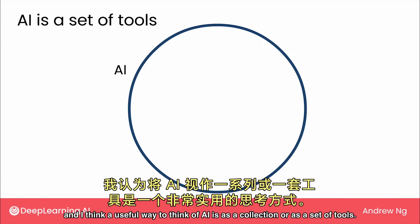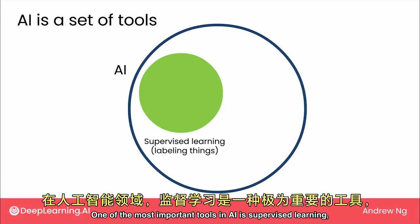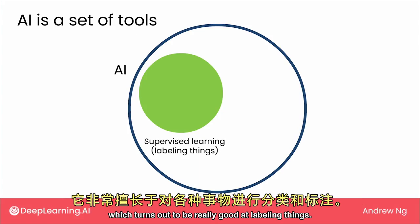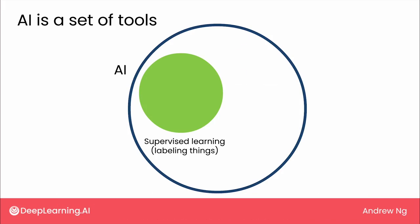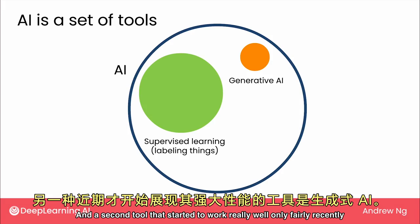I think a useful way to think of AI is as a collection or as a set of tools. One of the most important tools in AI is supervised learning, which turns out to be really good at labeling things. Don't worry if you don't know what this means — we'll talk more about it on the next slide. And a second tool that started to work really well only fairly recently is generative AI.